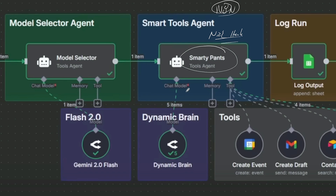So the heart of every agent — every agent must have a few things; it must have three things. But at the heart, at the brain — let's call it the brain — the brain of every AI agent...